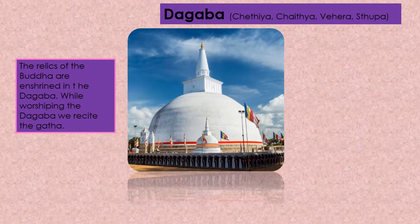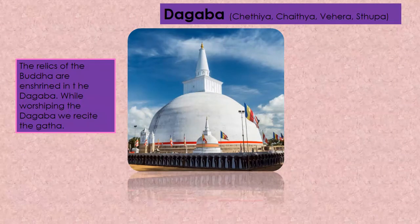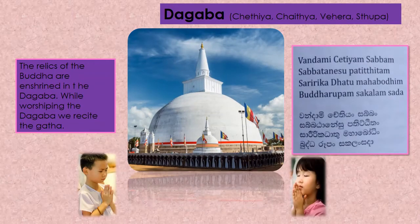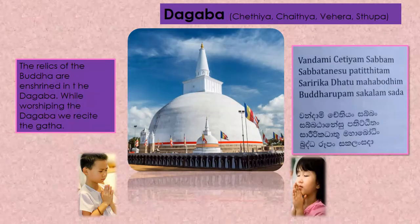We can call the Dagabba as Chetia, Chaitia, Vehera, or Stupa. The relics of the Buddha are enshrined in the Dagabba. While worshiping the Dagabba, we recite the gatha. Children, let's recite the gatha for the Dagabba: Vandami chetiyang sabbhang sabbhatane supatiktang sarirgadhatu mahabodhing buddha rupang sakalang sada.